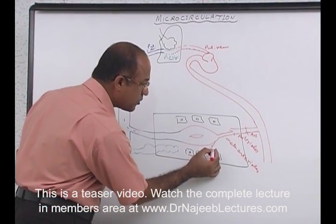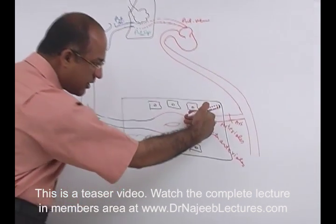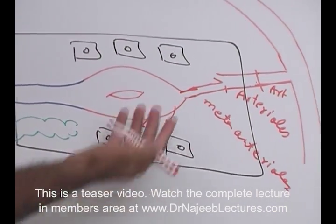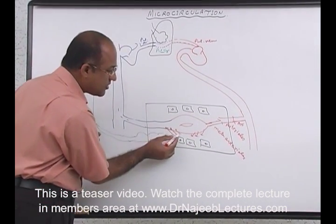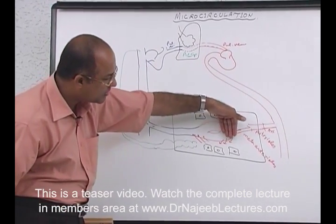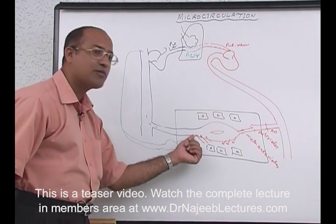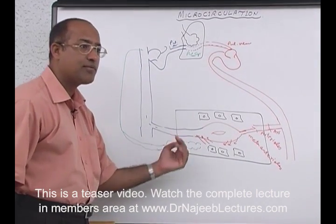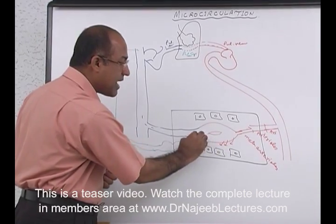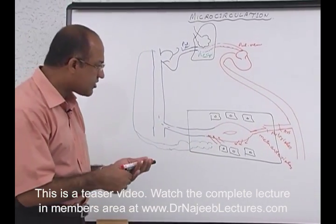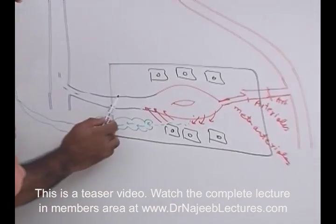Fluid moves out from the arterial end of the capillary, washing the cells, providing them with nutrition, and removing their waste products. From the venous end of capillary, fluid is going back and re-entering. So from all the microcirculation, fluid is all the time oozing out into the interstitial area and going back from the interstitial to the venous system. Some fluid — especially proteins which leak out — cannot be taken back and are drained by lymphatics.